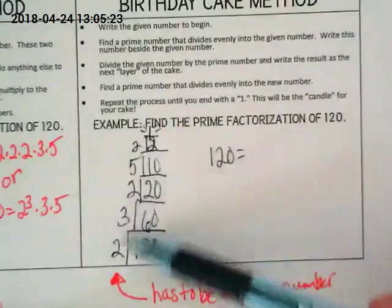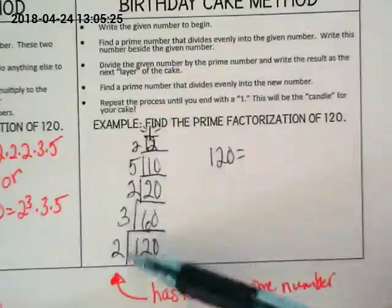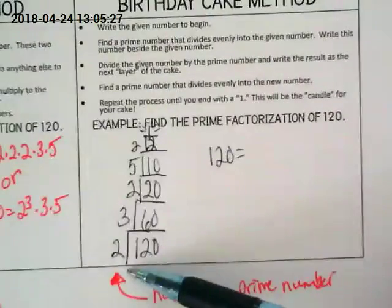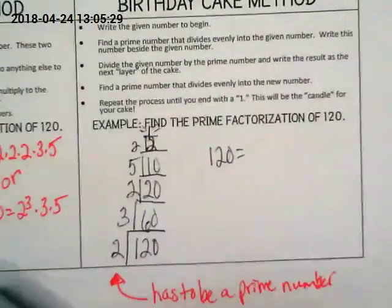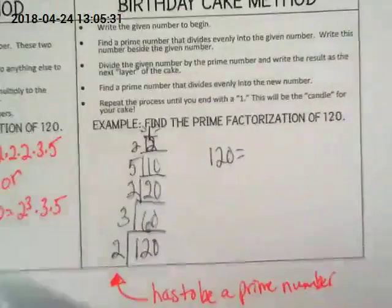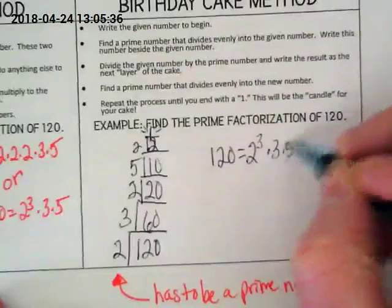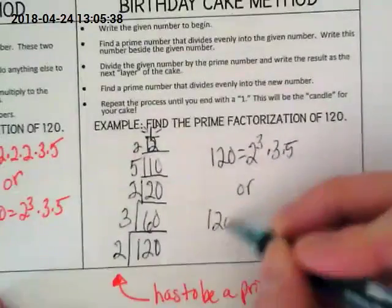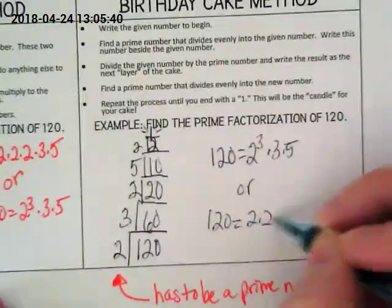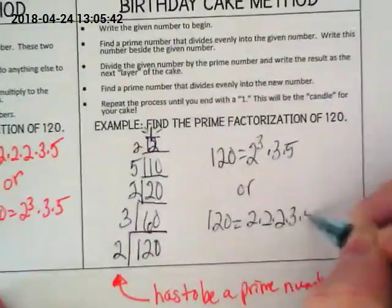Because all of my prime factors are down the side here, and I'm not going to accidentally miss them. I know sometimes when I've made factor trees and they go crazy, sometimes I've missed where a number is. So it could be 2 to the third power times 3 times 5, or 2 times 2 times 2 times 3 times 5.